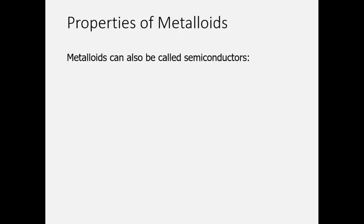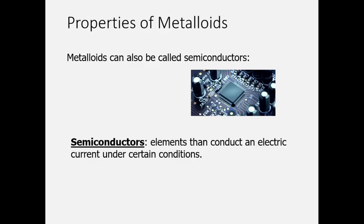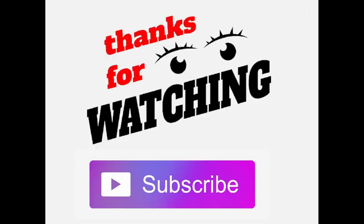The properties of metalloids: metalloids can also be called semiconductors. Our electronic appliances like mobile, TV, laptop use semiconductors. What is semiconductor? Semiconductors are elements that conduct an electric current under certain conditions. So semiconductors work in a particular environment, and metalloids are better suited for these applications.